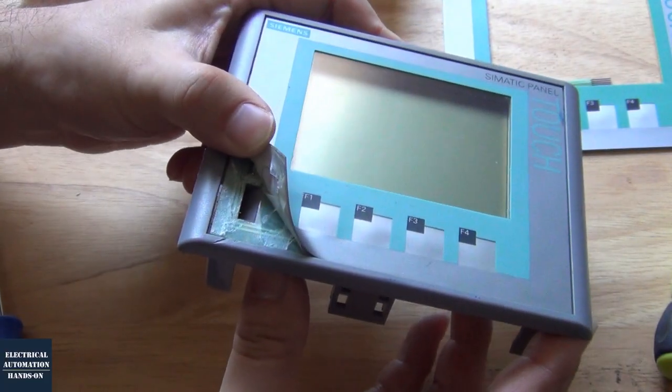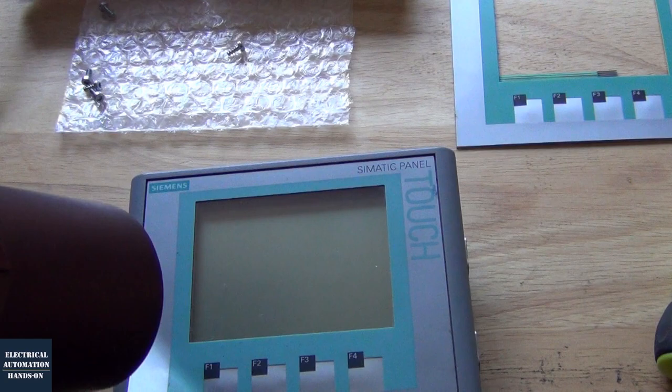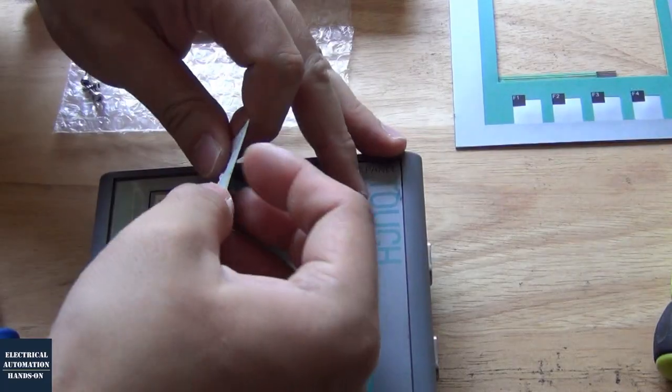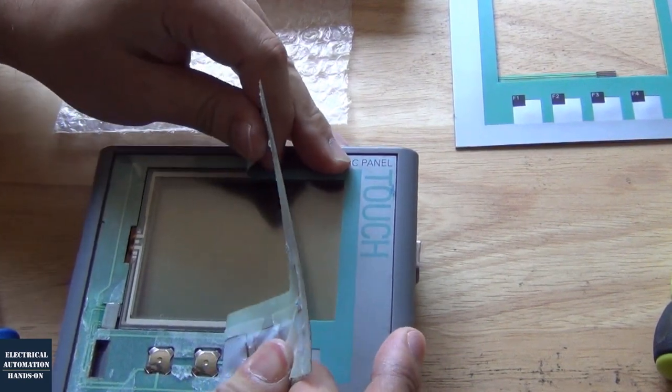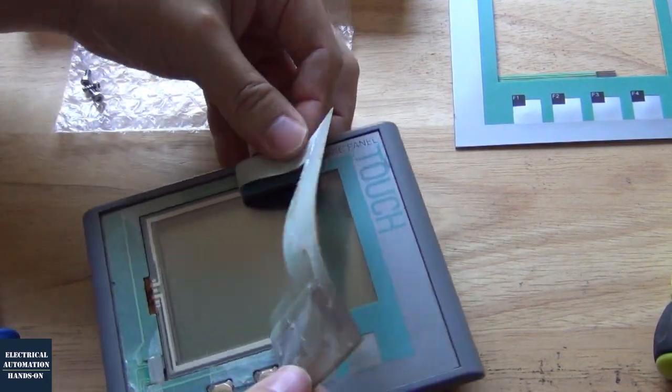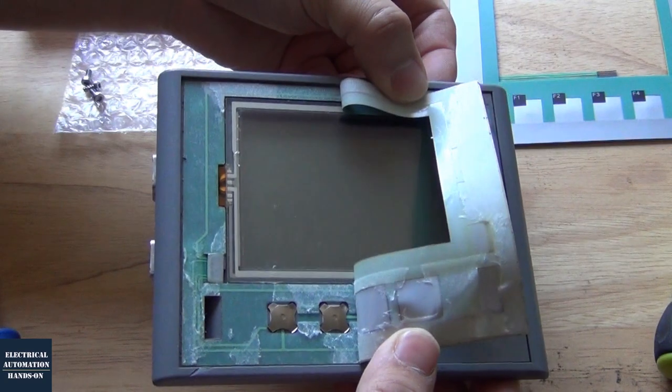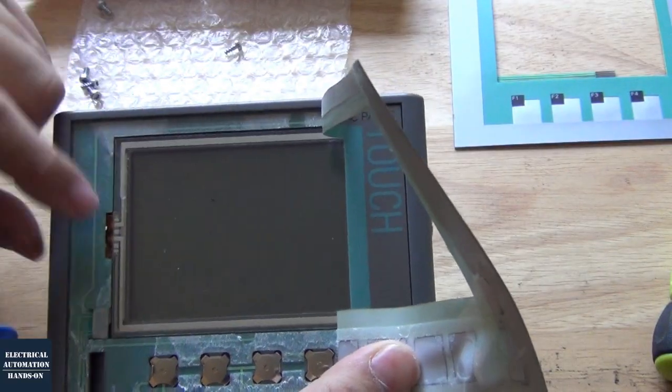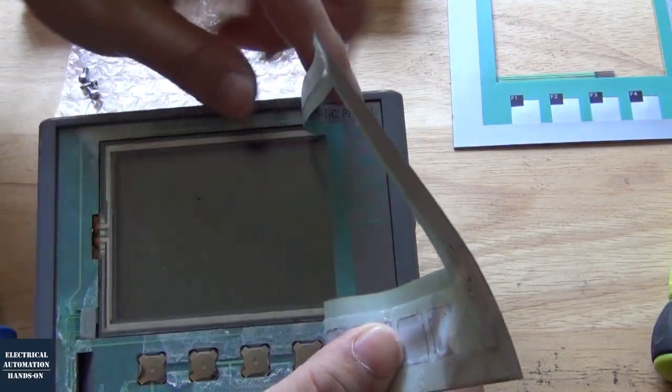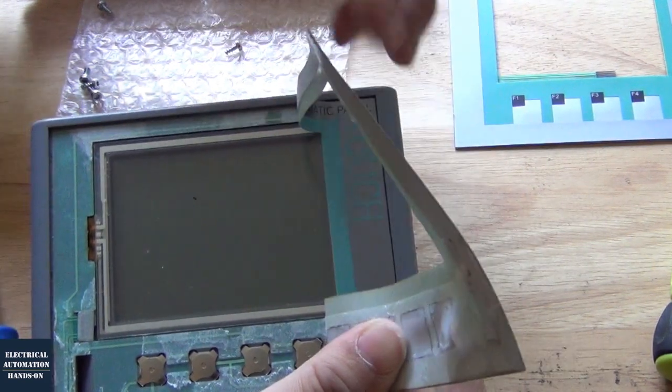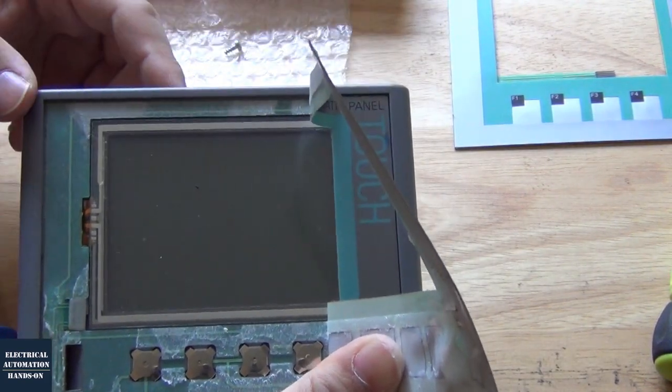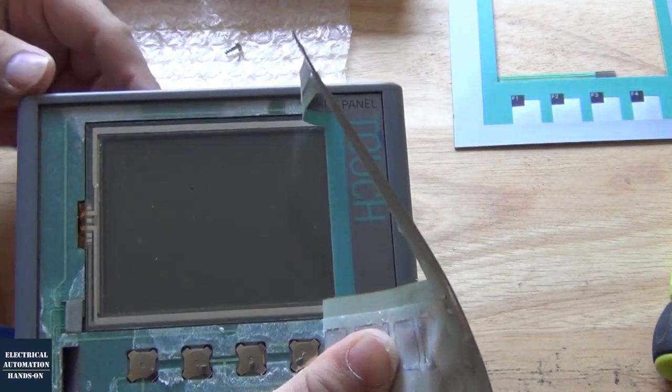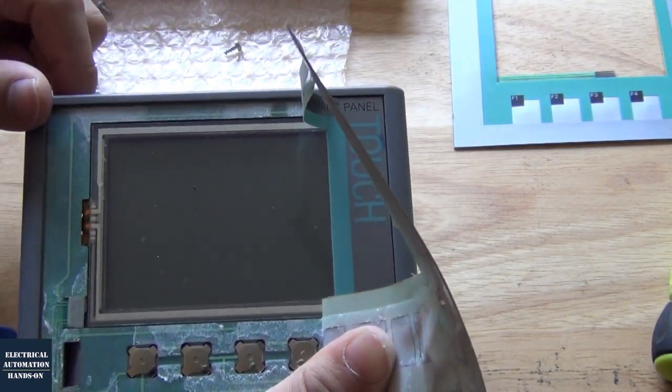So as we can see to change the screen, we have to peel off entirely this film. There's no easier way to partially peel this off. We have to peel off this film totally so that we can change the screen.